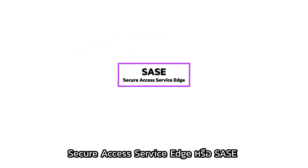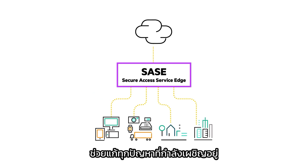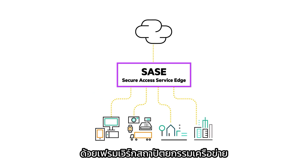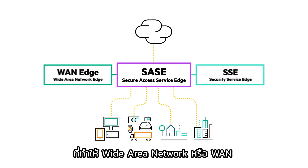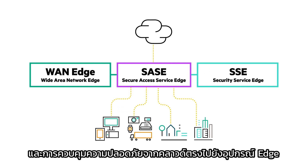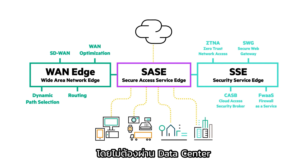Secure Access Service Edge, or SASE, does exactly that. It's a network architecture framework that delivers wide area network and security controls from the cloud directly to edge devices, without going through the data center.